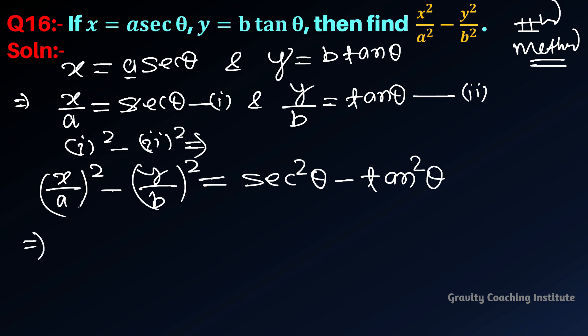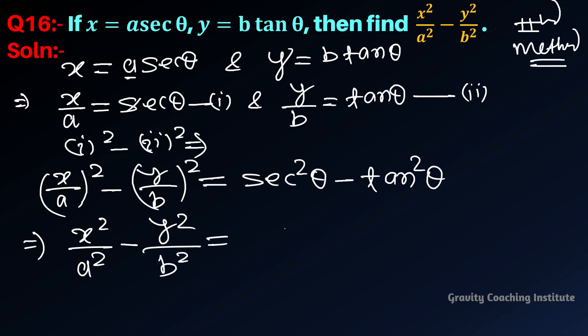Opening the bracket, we get x²/a² minus y²/b², and using the identity sec²(θ) minus tan²(θ) equals 1, the answer is 1.